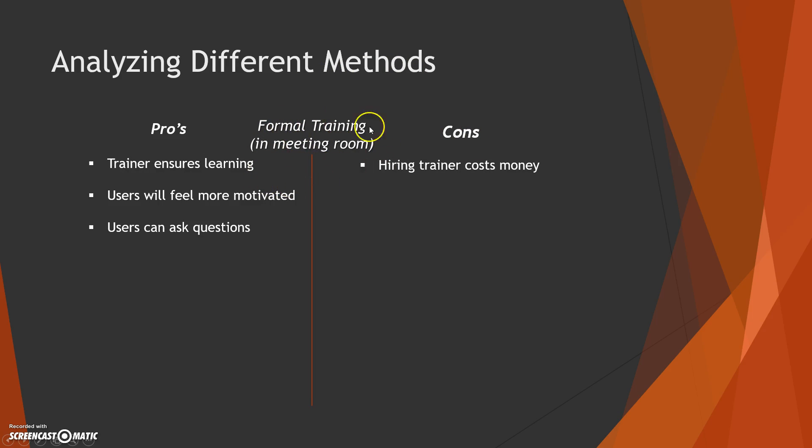This links to formal training and meeting rooms, where employees have proper training on or off the job. Pros include that the trainer ensures learning — for example, relating back to the SAT analogy, if you take a course you have to attend it, which improves learning. Therefore users feel more motivated, and users can ask questions that the trainer can answer live.